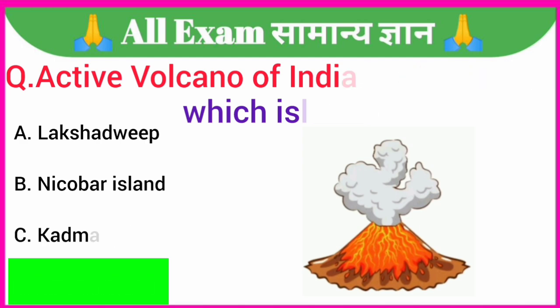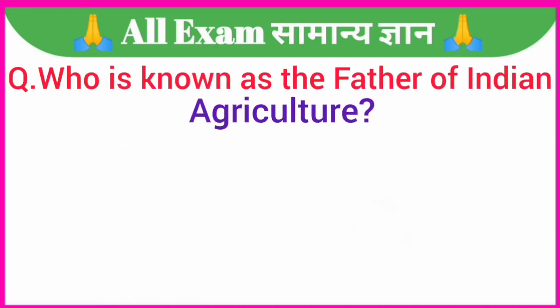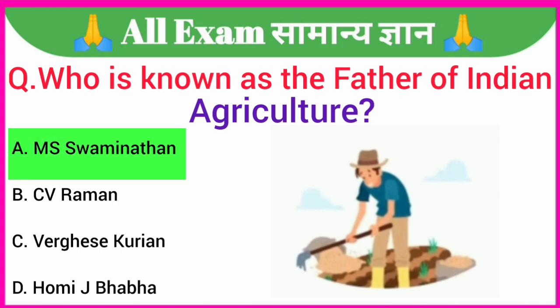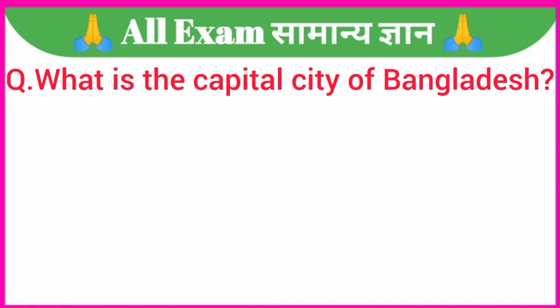Who is known as the father of Indian agriculture? A. M.S. Swaminathan, B. C.V. Raman, C. Varghese Kurian, D. Homie J. Baba. Your correct answer is option A. M.S. Swaminathan.